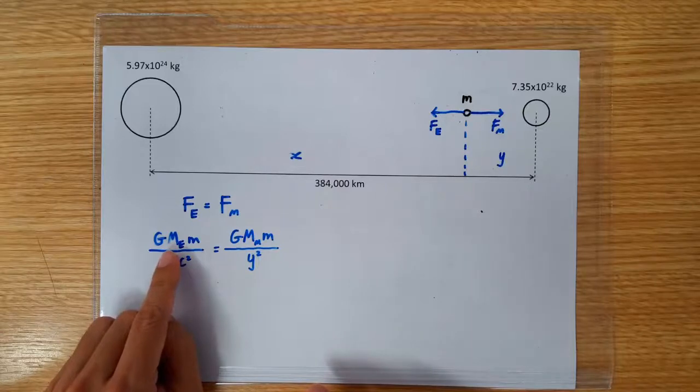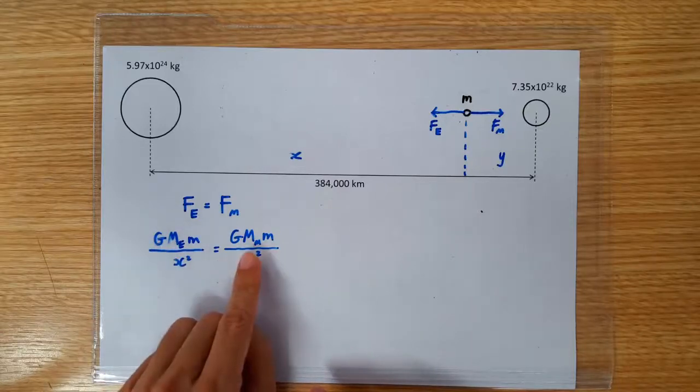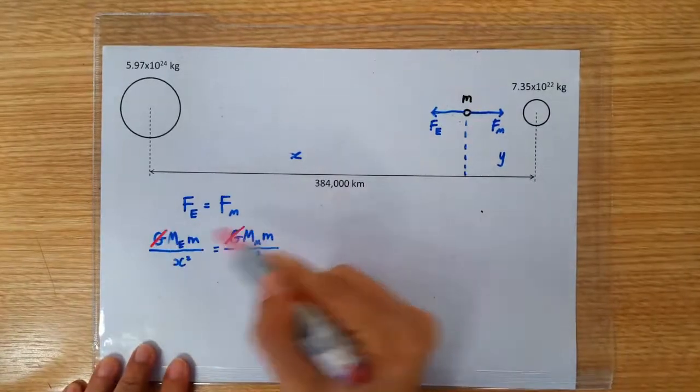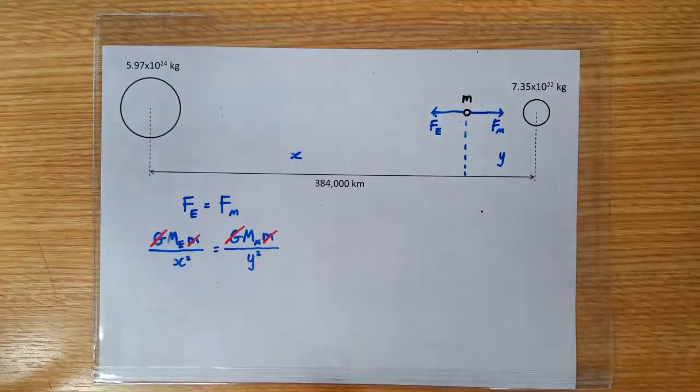M is the mass of the Earth and Mm is the mass of the Moon. This allows us to cancel away the big G and the little m on both sides of the equation.